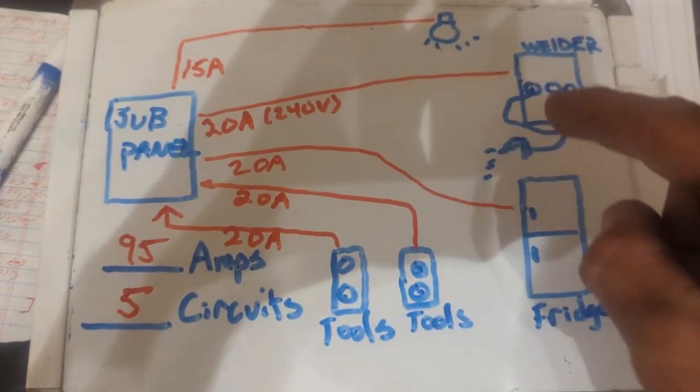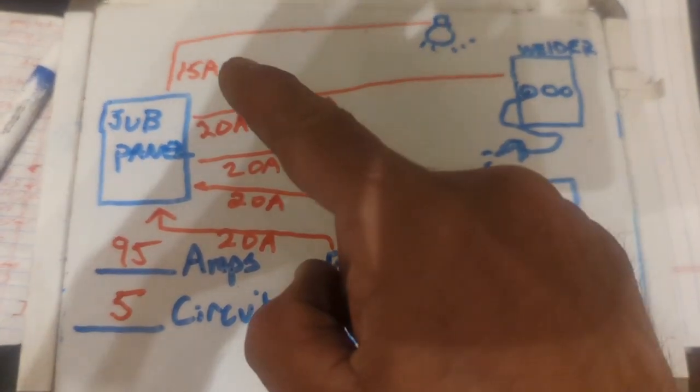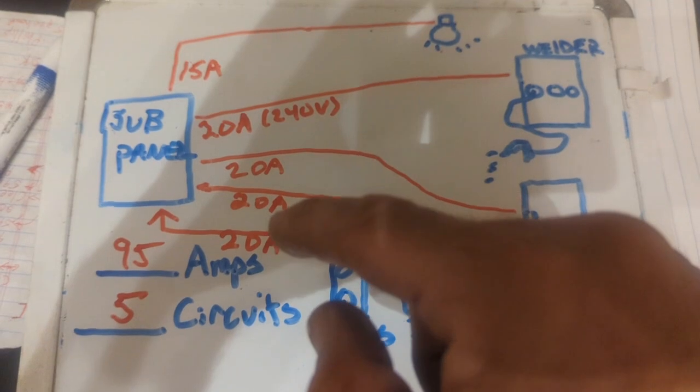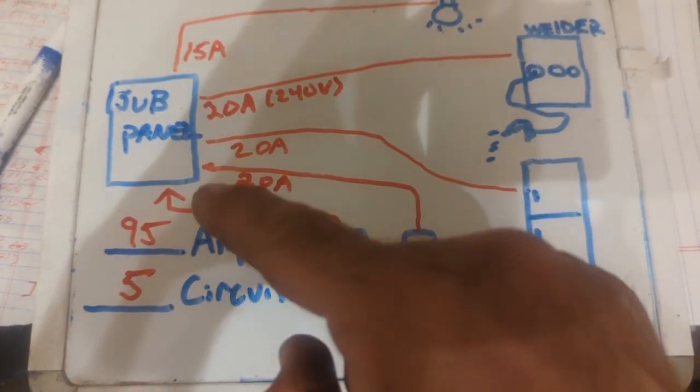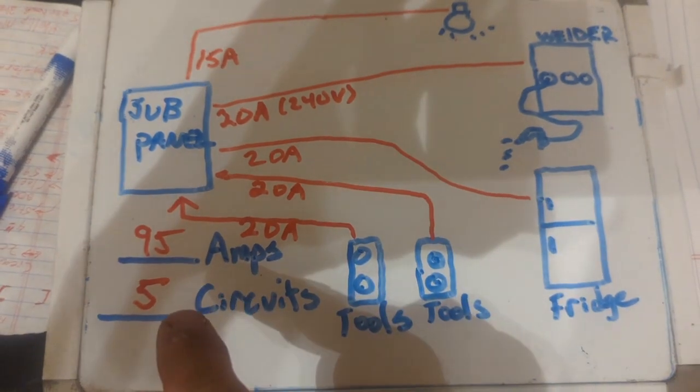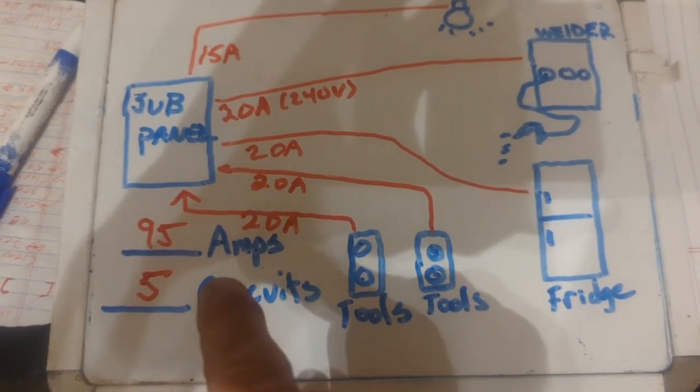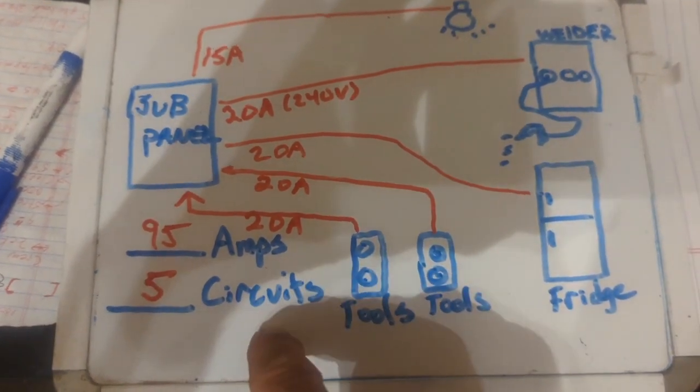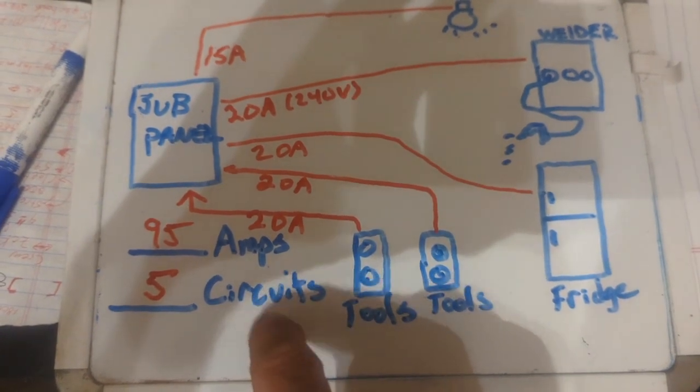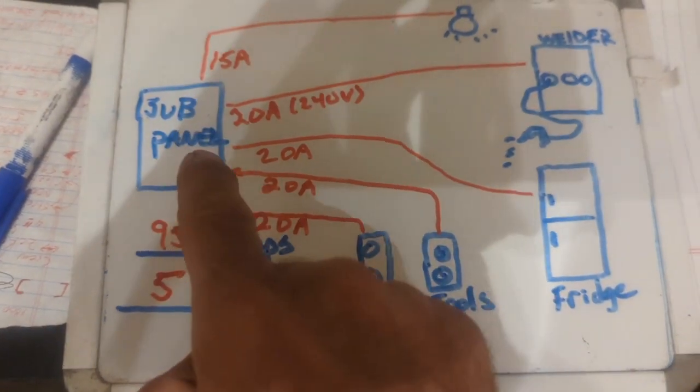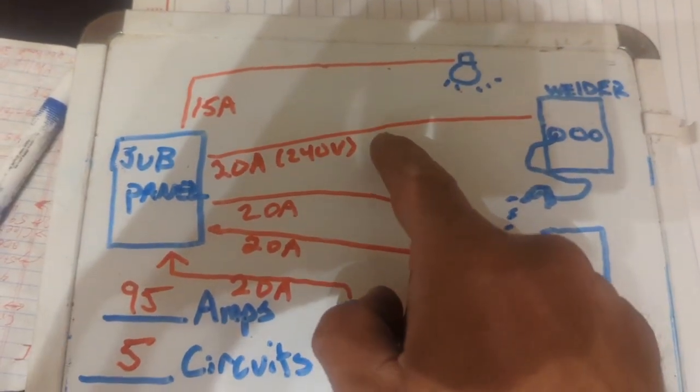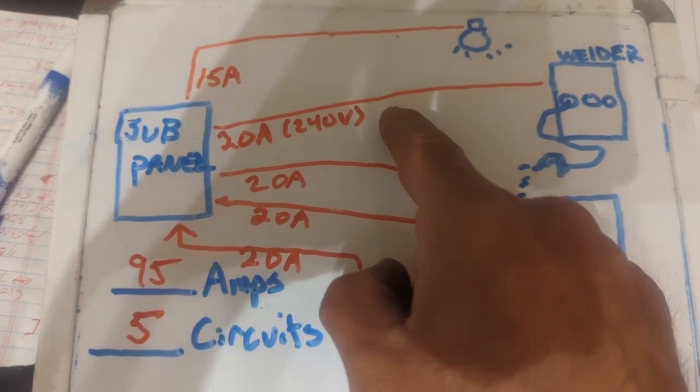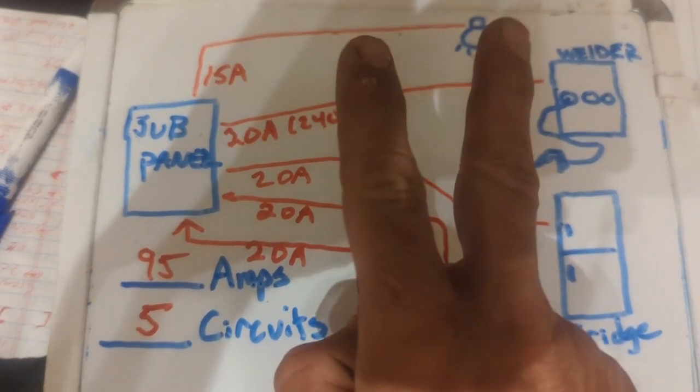So what I do is I simply will add up the amperage on these breakers. Not how much you're using on these, but how much the breakers are going to be. So the breakers I determined there's going to be 95 amps on the breakers and five circuits. Now this is wrong because if I went by this, the box that I got would be too small because this welder is going to be using a double pole breaker, meaning it's going to take up two slots.